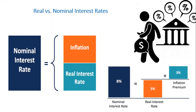To better understand how income redistribution happens, consider someone who borrowed $100 at a rate of 8%. At the end of the year, the lender gets back $8: 3% accounts for inflation and 5% (or $5) is profit for the lender. However, if inflation was higher than expected — say 4% instead of 3% — then with the same nominal interest rate, the real interest rate will be 4%, meaning the lender earns only $4 instead of $5. This is why we say that in periods of high inflation, the borrower is better off and the lender is worse off.